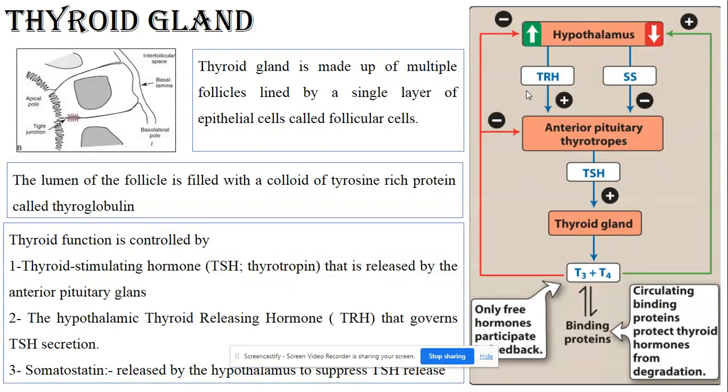The thyroid gland is not only under the control of TRH but also a hormone called somatostatin. Somatostatin is a hormone produced by the hypothalamus.